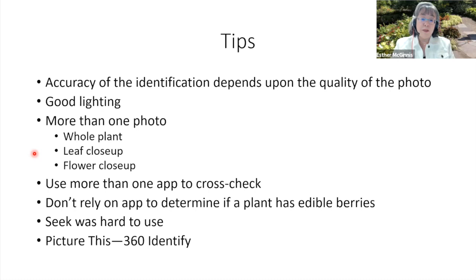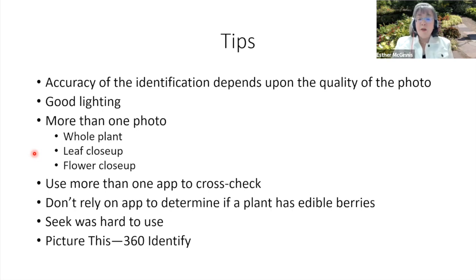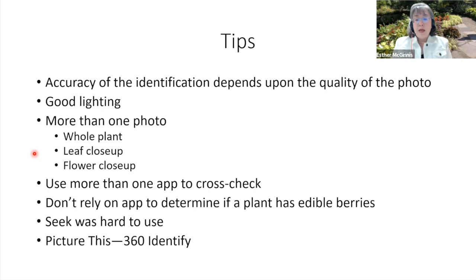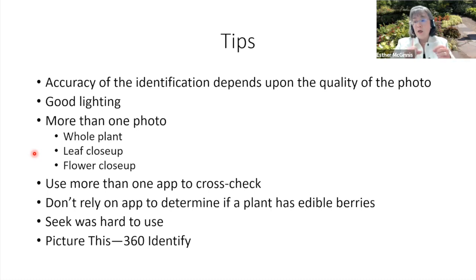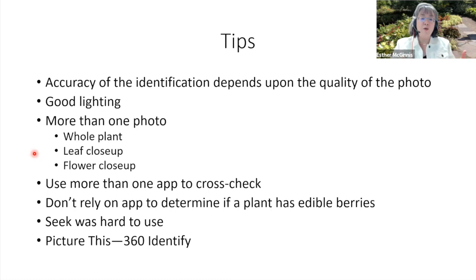Since none of the apps were 100% accurate, I think it's helpful to have more than one app on your cell phone to cross-check. Don't rely on the app to determine if a plant has edible berries — I would hate for somebody to go to the hospital because they ate something toxic. In that situation, consult with an expert or use a suite of characteristics: cut into the berry and see how many seeds there are, check if there are sepals on the bottom of the fruit, or how the fruit is attached to the plant.